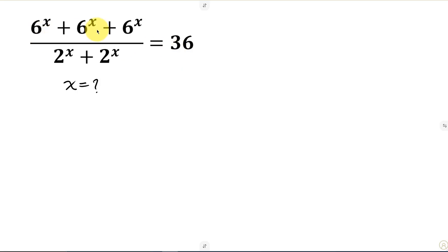Notice that from the numerator, 6 to the power of x is common, so we can factor out 6 to the power of x. Then we'll put brackets, 6 to the power of x divided by 6 to the power of x is 1 plus this divided by this is 1 plus this divided by this is also 1, all over.